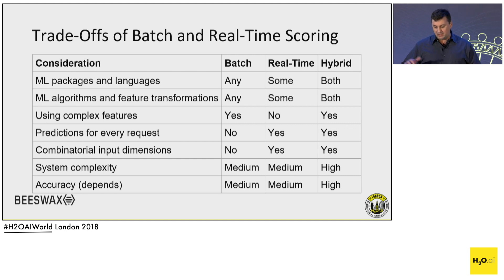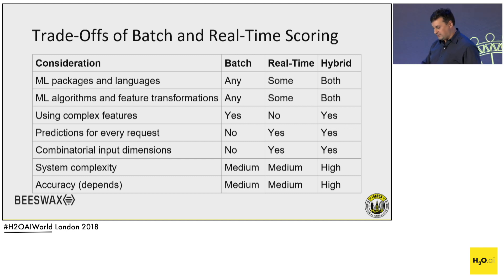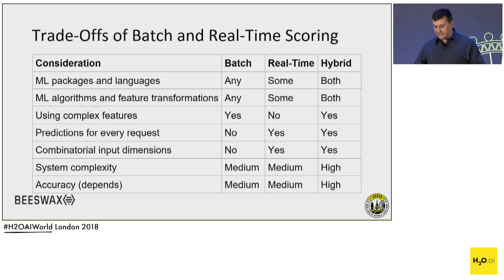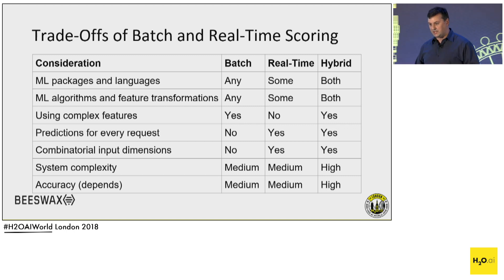On system complexity, I rate both batch and real-time as medium because they're still complex, but you only need to build part of a hybrid system. In batch, you need to build the batch scoring engine and the real-time cache. In real-time only, you have to build the real-time component, which is more difficult generally. In hybrid, you need both. On accuracy, because in batch you can't have complex features or combinatorics of dimensions, hybrid will probably provide the most accurate predictions.